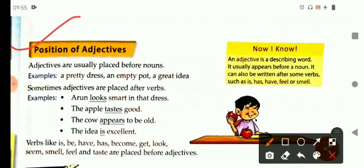Now, position of adjectives. Adjectives are usually placed before nouns. For example, a pretty dress, an empty pot, a great idea.